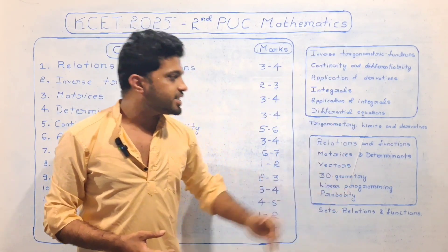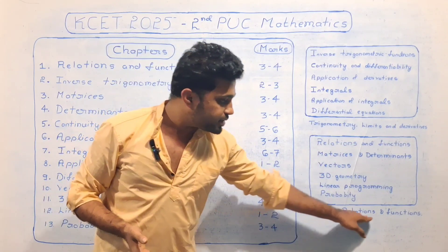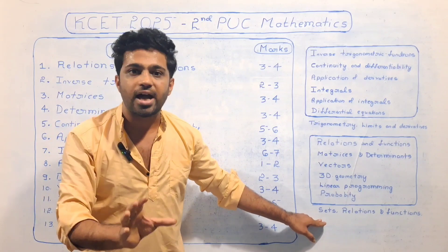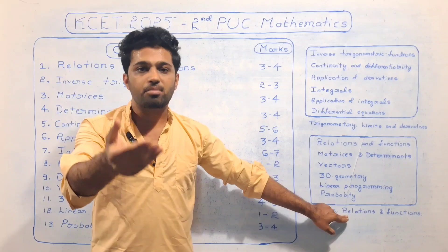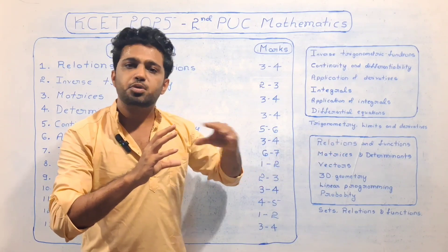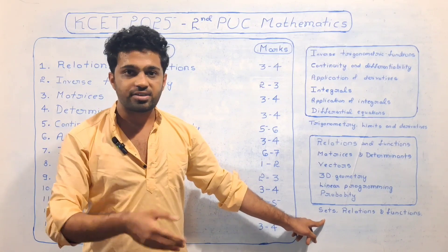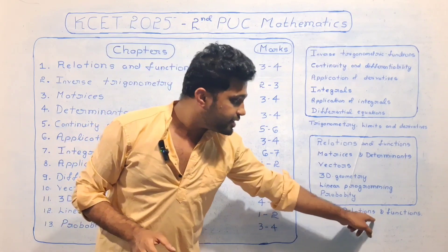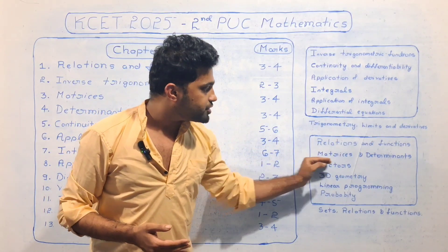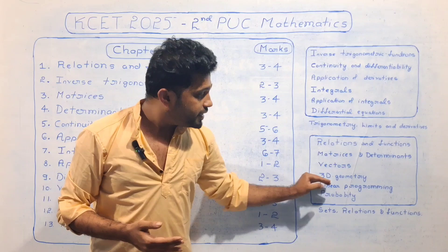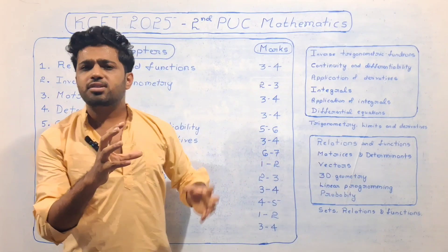Chapter-wise, we need to start preparation. The chapters are: Relations and Functions — also present in 1st PUC, so the chapter will be done on that basis. Then Matrices and Determinants, Vectors, 3D Geometry, Linear Programming (LTP), and Probability. These chapters are all covered in the second PUC syllabus and need to be completed.